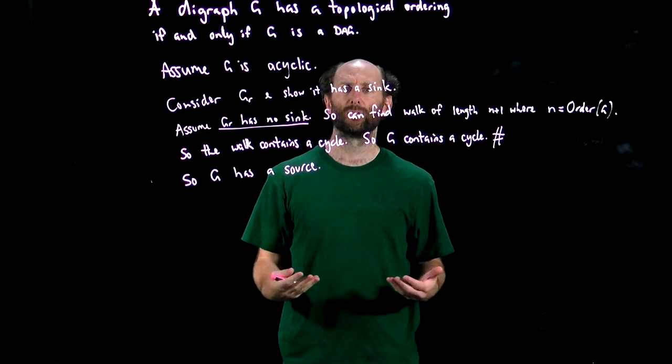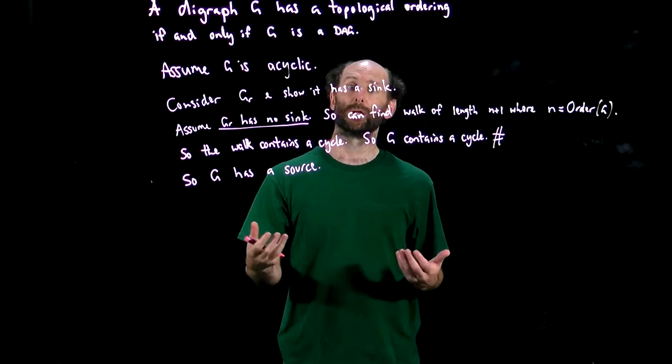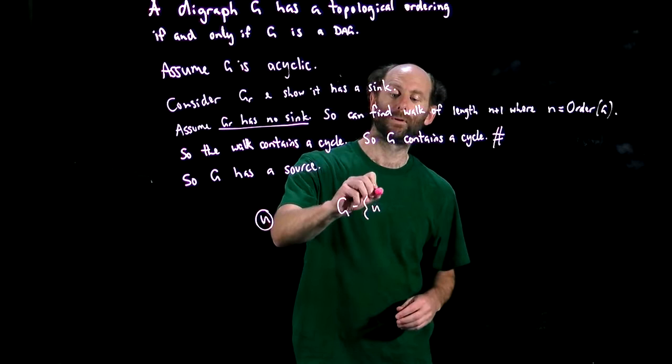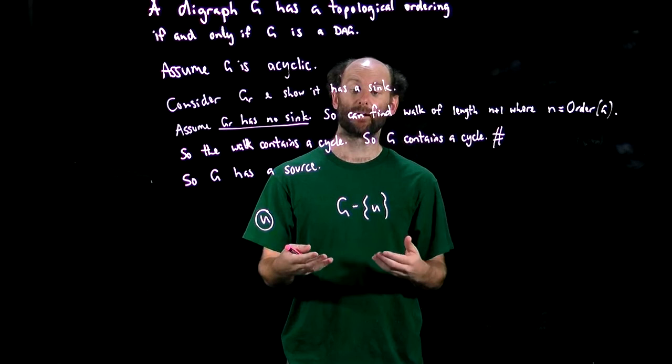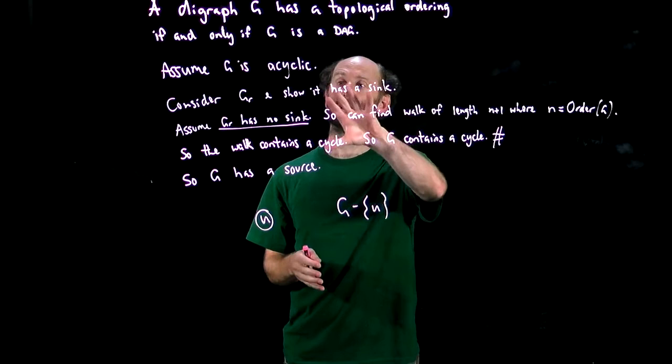Okay, so now that we've established there is a source in G, we can grab that source, call it u, and put it at the start of our ordering. Then we can consider the digraph G minus the node u and any arcs that come out of it, and notice that that must also be a DAG. It's definitely a digraph and since all we've done is take away one node and any arcs that come out of it, we can't have created a cycle so it must still be a DAG. So the same argument applies here: it must have a source.